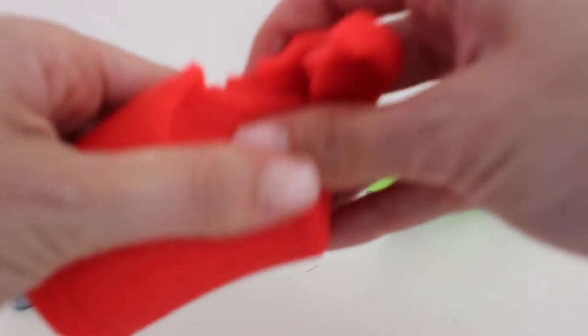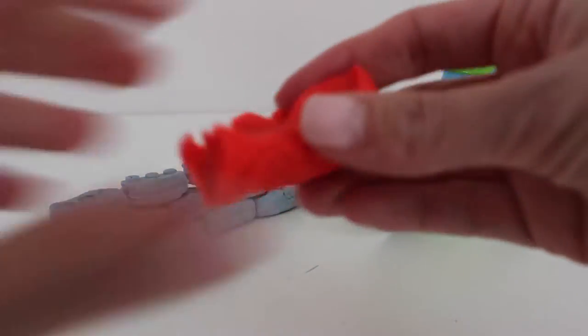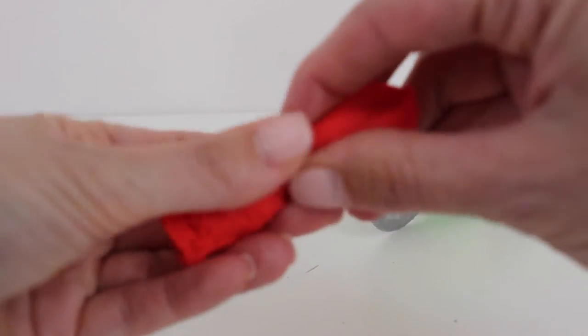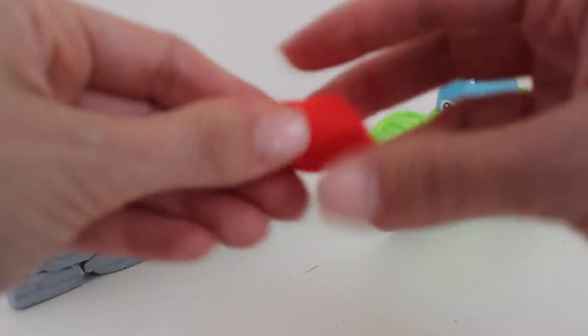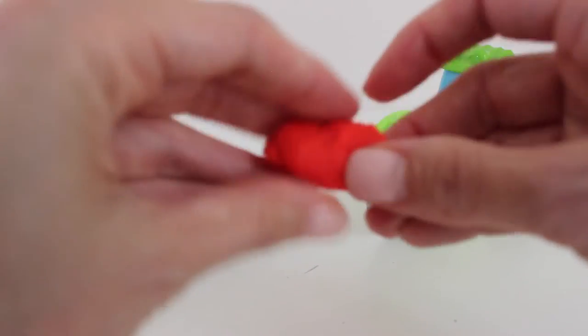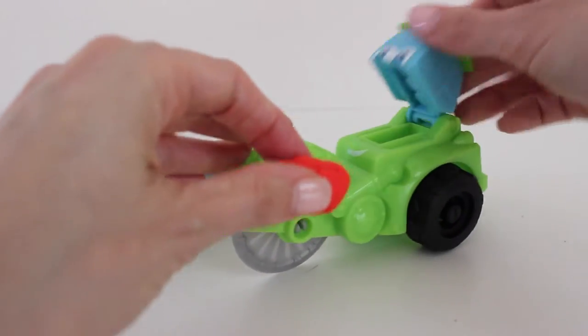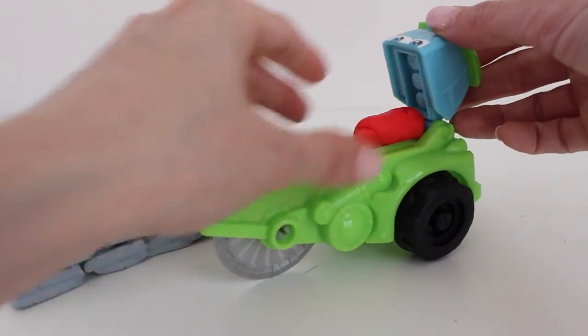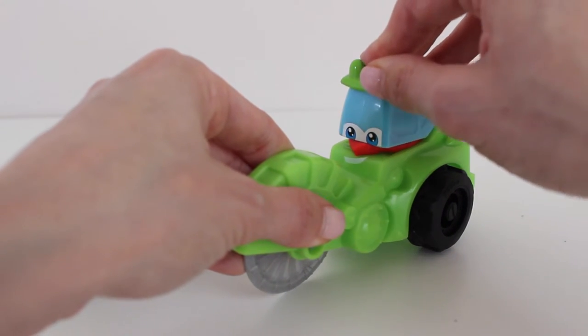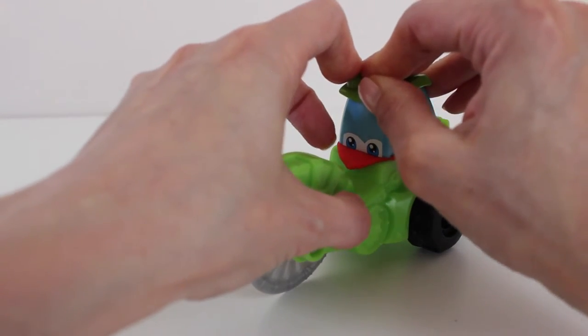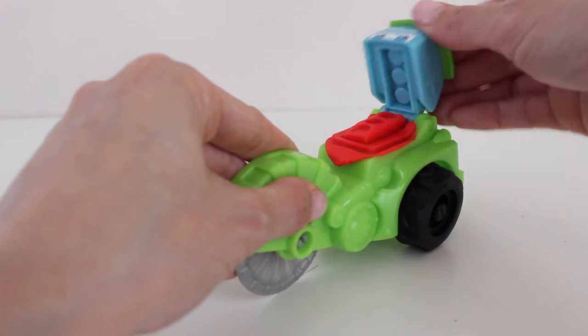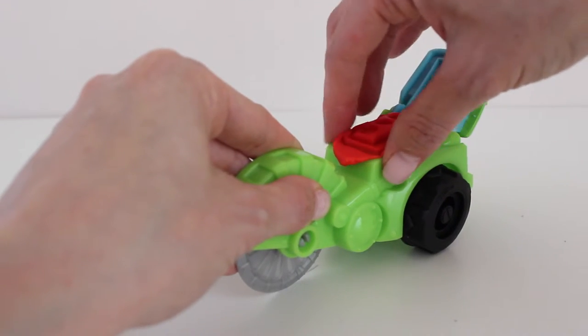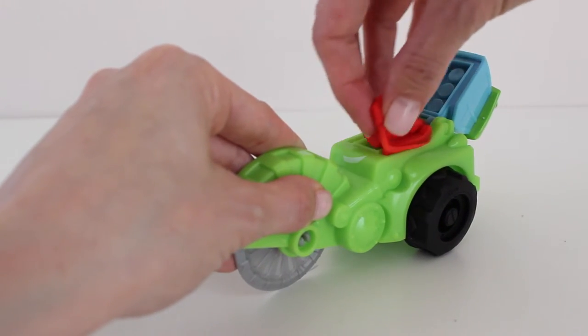So if I take some of my red Play-Doh, I'll do the same thing with my truck. Open the truck and put the red Play-Doh right inside and give it a press. And now I have some red bricks.